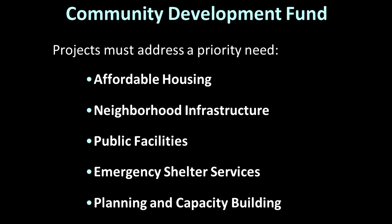Additionally, projects must address a locally designated priority need. In our area, five priorities have been established. One: affordable housing, both the preservation of existing units and the creation of additional units. Two: neighborhood infrastructure, which includes surface infrastructure such as streets, sidewalks, and lighting, as well as subsurface infrastructure such as water and sewer lines. Three: public facilities, which can include parks and community centers, as well as facilities owned by non-profit organizations dedicated to providing services to lower and moderate-income residents. Four: emergency shelter services for the homeless and those at risk of becoming homeless. And finally, five: planning and capacity building, which is increasingly important as our area grows and continues to become more urban.